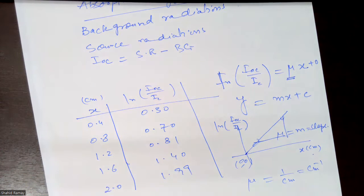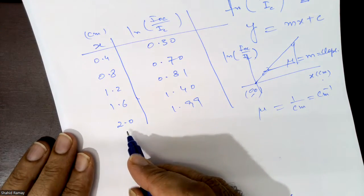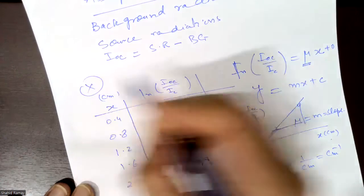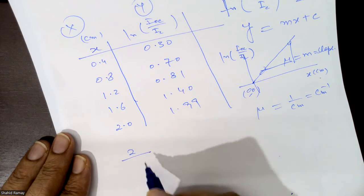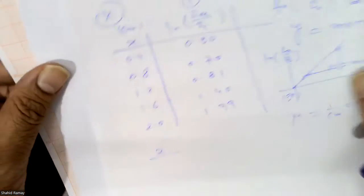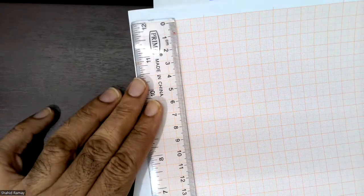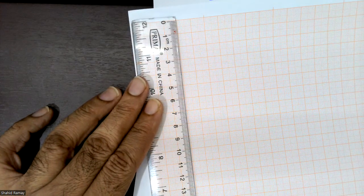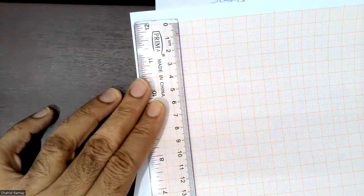To plot this graph, we follow the same rules. First, see the maximum value along the x-axis. The x-axis is here and the y-axis is here. The maximum value is 2. Before counting the number of squares, first draw the y-axis line and the x-axis line.